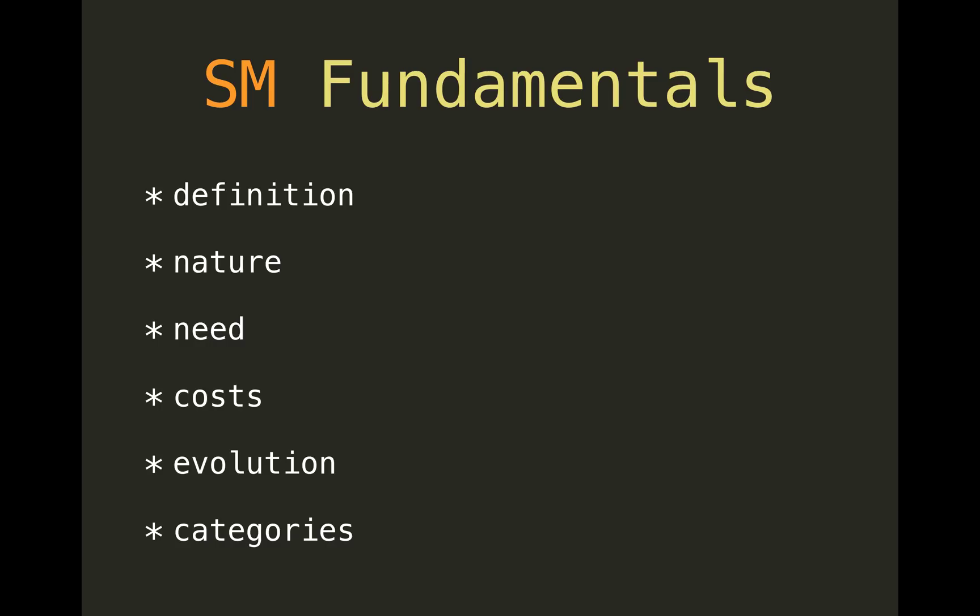The fundamentals of software maintenance include this definition we've just discussed along with some terminology. The nature of maintenance comprises things like process implementation, problem analysis, modification, reviewing, acceptance, migration, and retirement. The need for maintenance mainly arises from fixing bugs, improving design, migration, adaptation, and retirement.